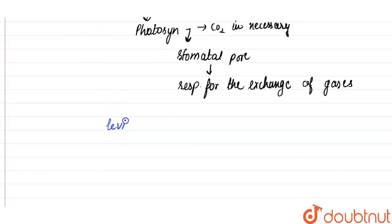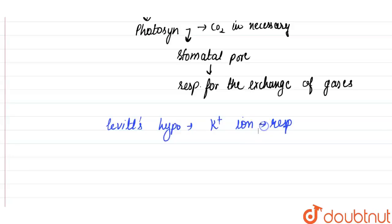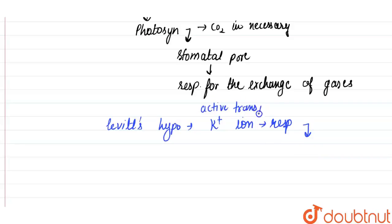According to Levitt's hypothesis, potassium ions are responsible for the opening and closing of stomata. The active transport of potassium ions is the key mechanism involved.